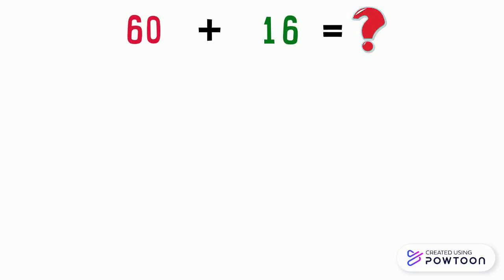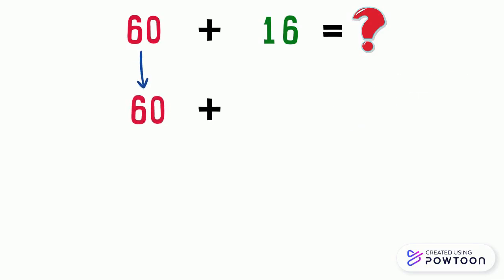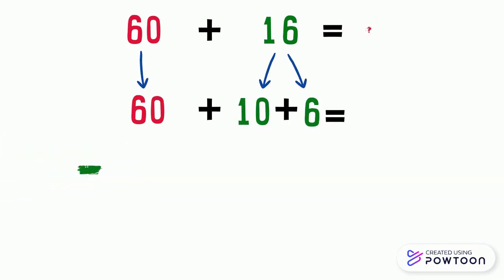Another example: 60 plus 16. The number 16 is equal to 10 plus 6. So, 60 plus 16 equals 60 plus 10 plus 6. And 60 plus 10 equals 70. Then add 6, so it will be 76.